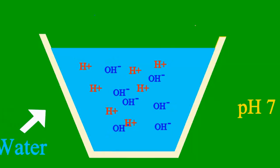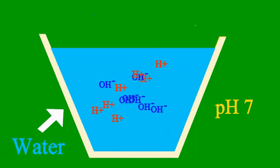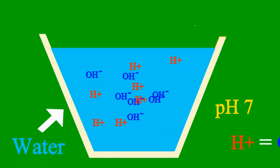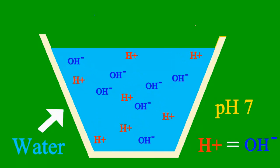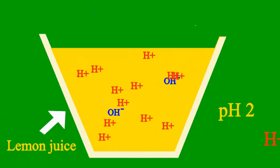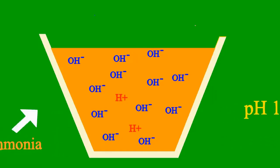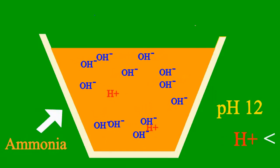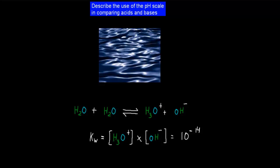When the pH is 7, it's a case where the sample is neither an acid nor a base. But less than 7, it's an acid. More than 7, it's a base all the way.